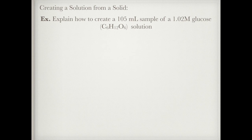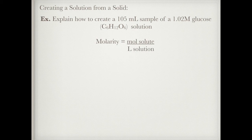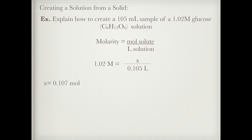In this lesson I'm going to explain how to create specific types of solutions. The first type is when I've got a solid in my prep room and I need to make an actual solution. For example, I want to create a 1.02 molar solution of glucose with a volume of 105 milliliters. You'll use the molarity formula — I know my molarity is 1.02 molar and my volume must be in liters of solution, so that's 0.105 liters, and I'm solving for moles.